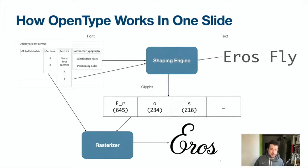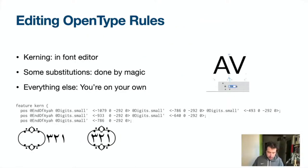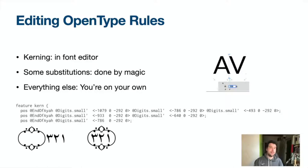Then you have another piece of software called a rasterizer — in Linux that's usually FreeType — and that goes and gets the outlines from the font and draws them on your screen or printer. How do we get these substitution and positioning rules into the font? For some of them it's quite simple: kerning is usually done in the font editor and there's a nice interface to that. Some substitution rules, like the FFI ligature, can be automatically generated based on the names of the glyphs.